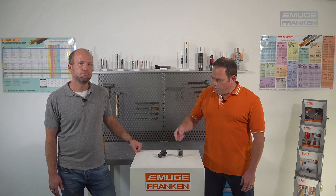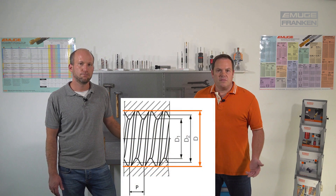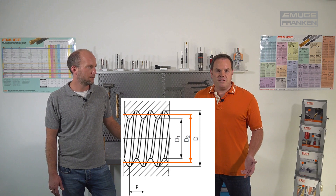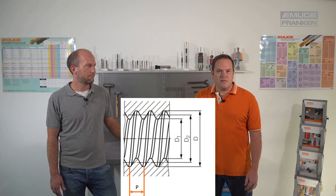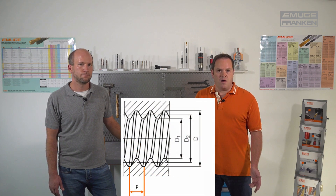It is important to know the usual terms for internal and external threads. For the internal thread, there is a major diameter — the nominal dimension. The pitch diameter is checked via the internal gauge. There is also a minor diameter, which can be checked using a separate gauge. Dimensions are defined with capital letters, and the pitch P represents the path of one complete revolution.